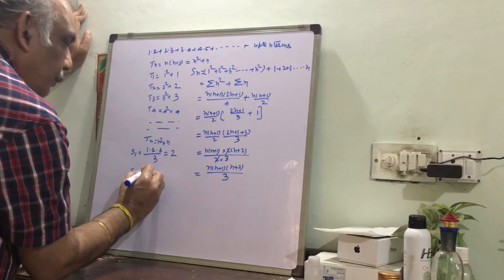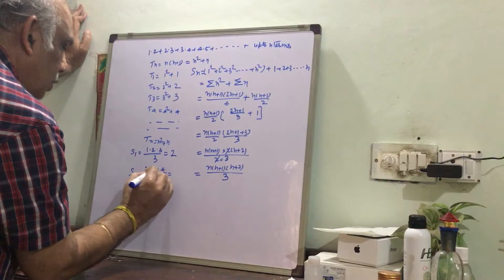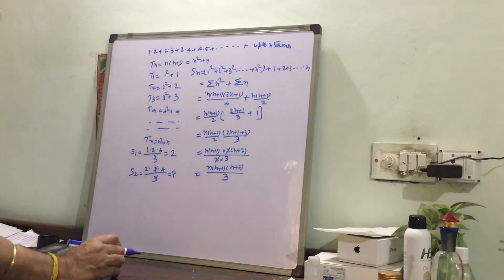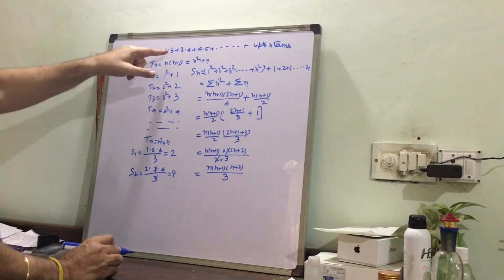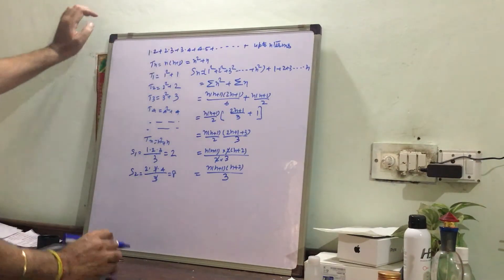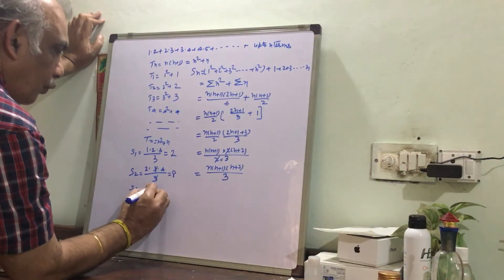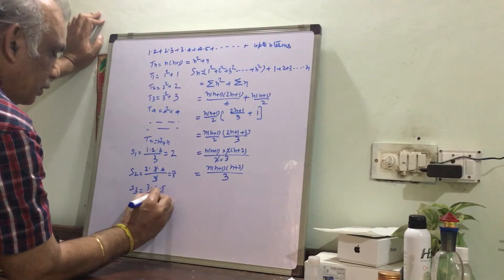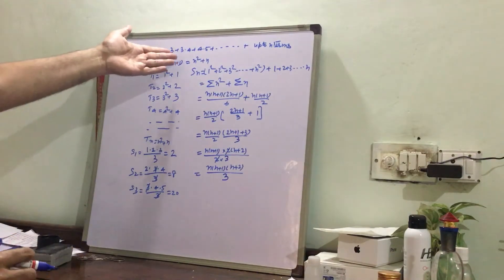So we are left with the same answer. Here it is, see, 2 plus 6 is 8, 8 plus 12 is 20. Let us see we are getting this now. S3 equal to 3 into 4 into 5 by 3. We can see this, so we are getting 20. So from here also we are getting 20.